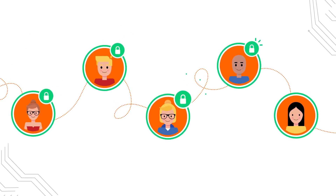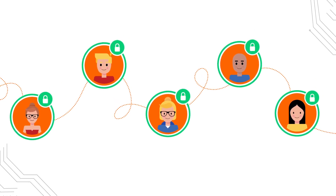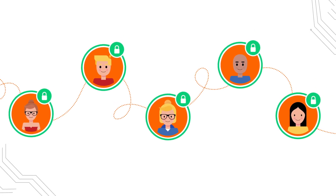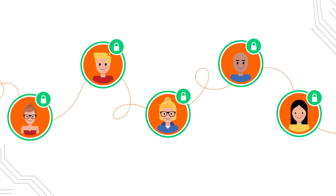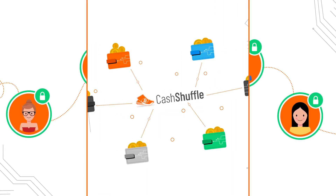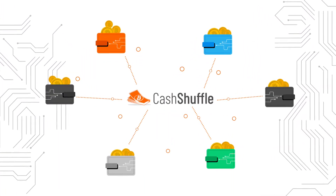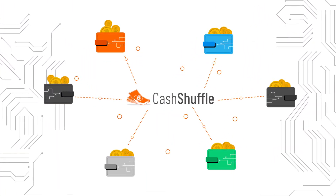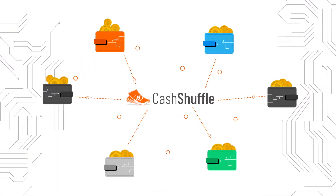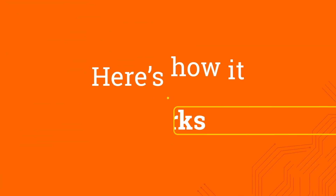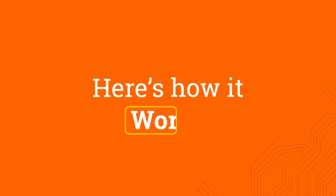Not even the other participants in the shuffle know which of the shuffled coins is yours. This process is entirely automated by wallets with CashShuffle support. But here's how it works under the hood.